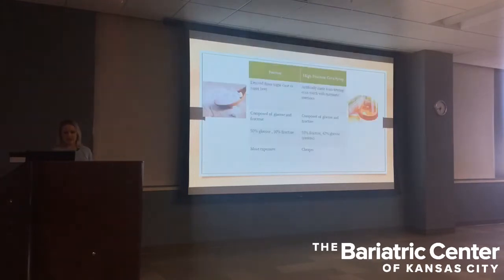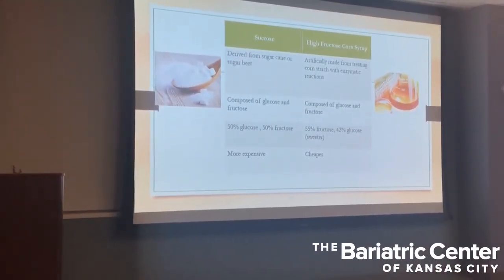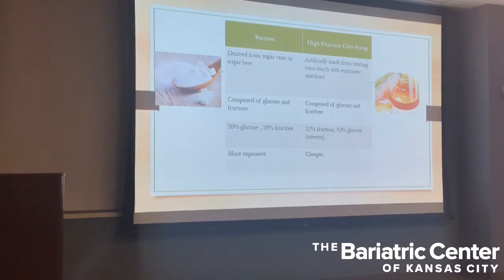Let's compare sucrose — table sugar — to high fructose corn syrup. Sucrose is derived from sugar cane or sugar beet, whereas high fructose corn syrup is artificially made by treating cornstarch with enzymatic reactions. Both are composed of glucose and fructose together, but the main difference is that high fructose corn syrup has more fructose and not as much glucose, whereas sucrose is 50-50. That's why high fructose corn syrup is actually sweeter — fructose is the sweetest monosaccharide. It's also way cheaper, which is why companies go to the trouble of enzymatically treating cornstarch. You're going to find high fructose corn syrup in sweet sodas, candy, and commercially produced pastries.